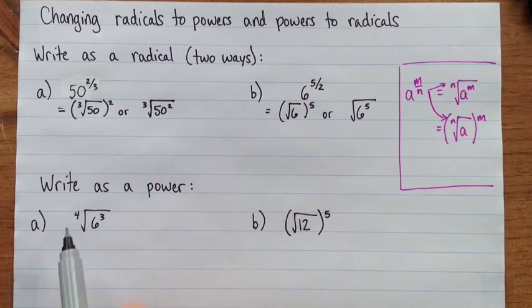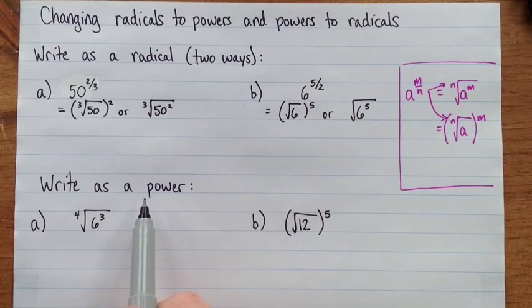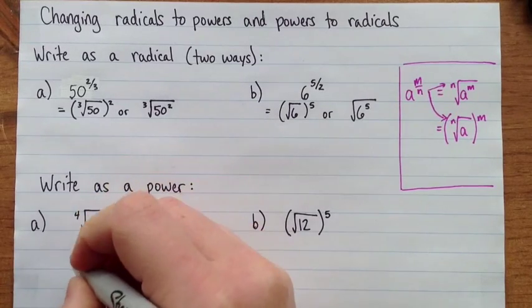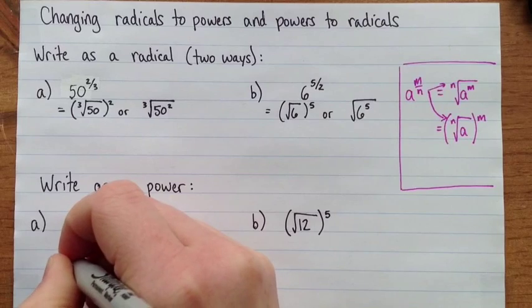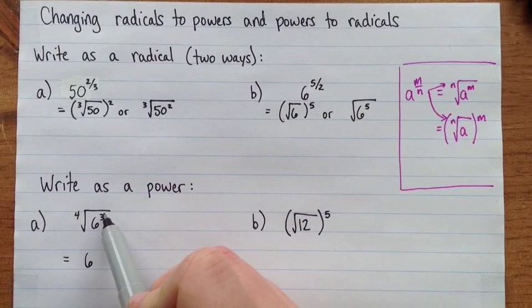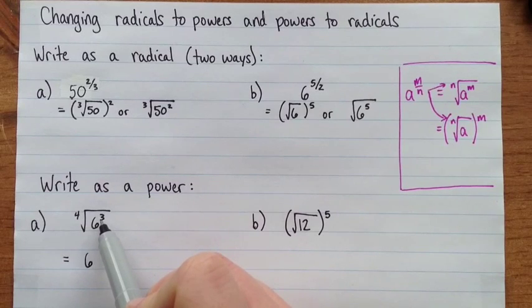Okay, so down here, these questions ask us to write as a power. So that means the base with an exponent. So the base is going to be six. And then the power, the number that we're raising the base, the exponent that we're raising the base to, that's going to be the numerator of the fraction, the top number.